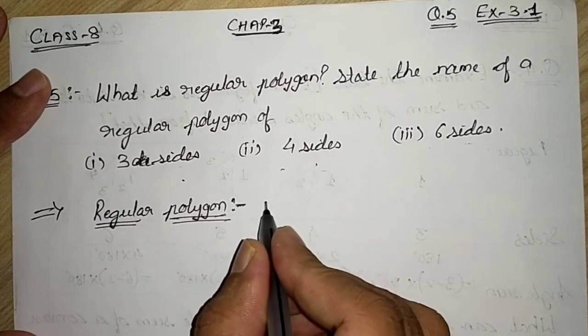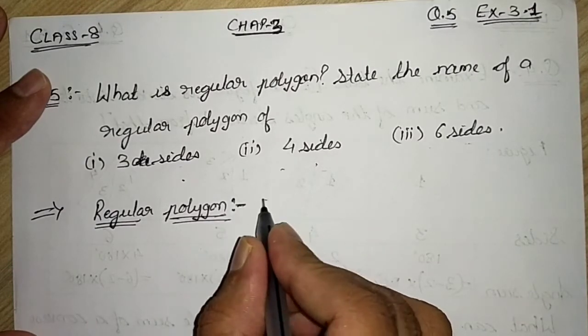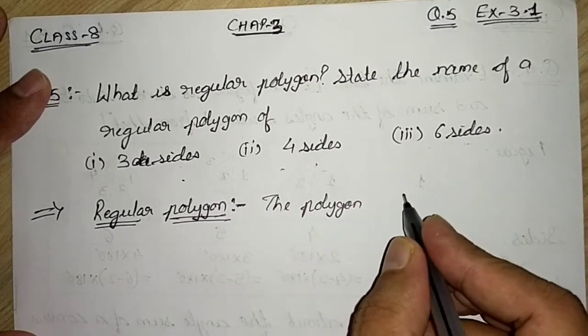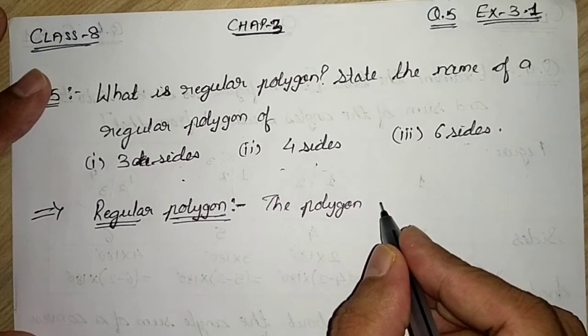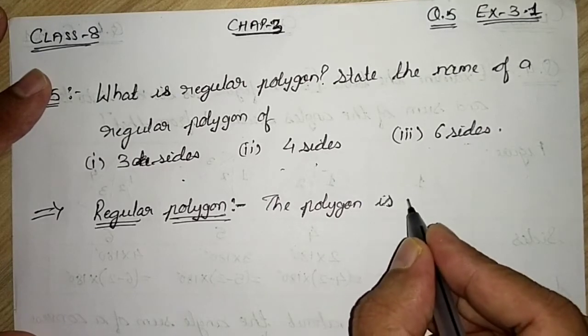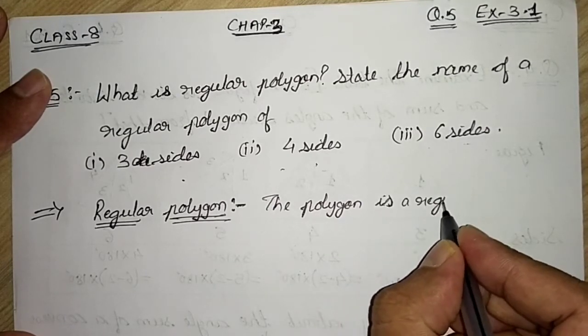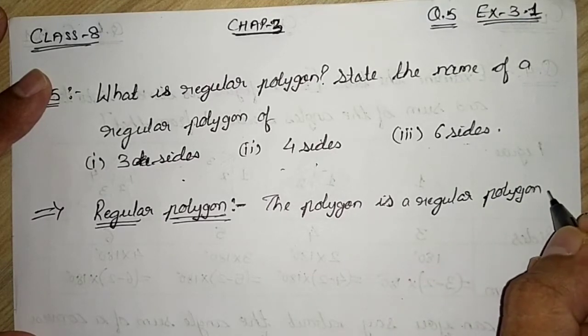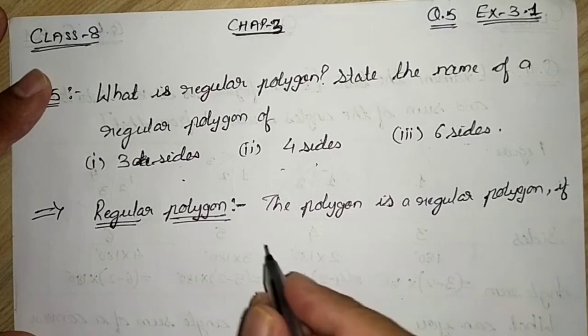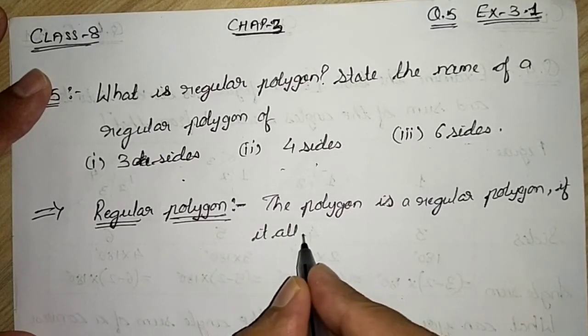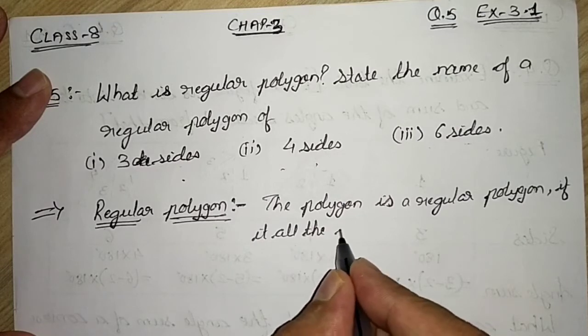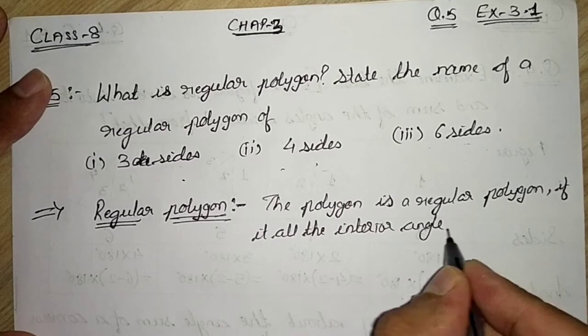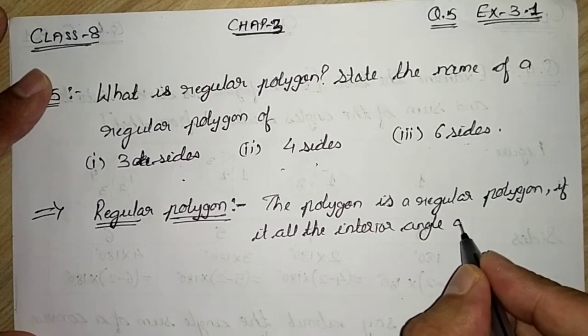We define a regular polygon as: The polygon is a regular polygon if all the interior angles are equal